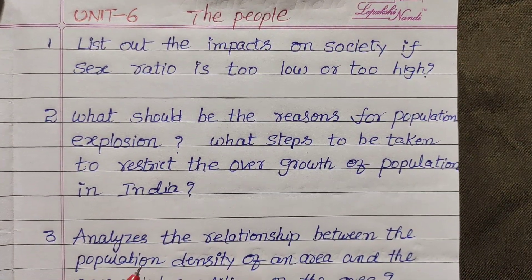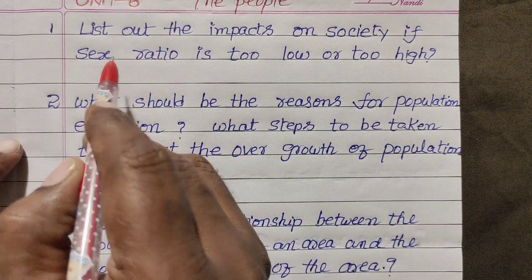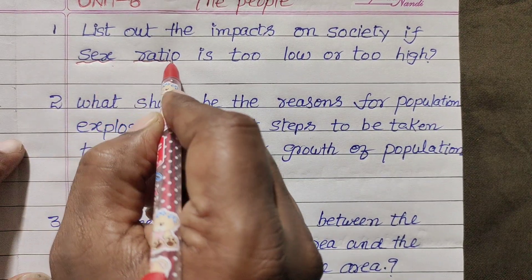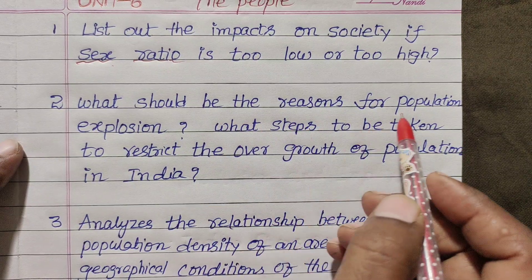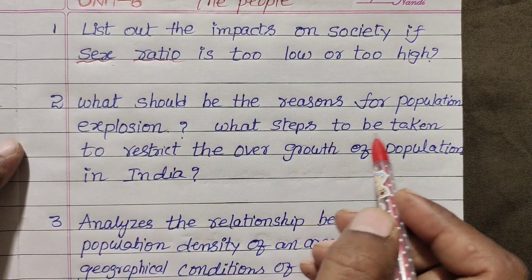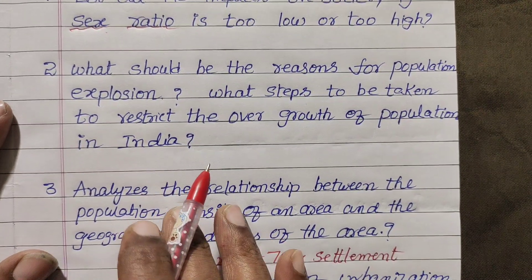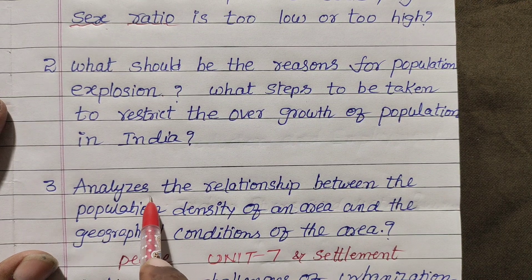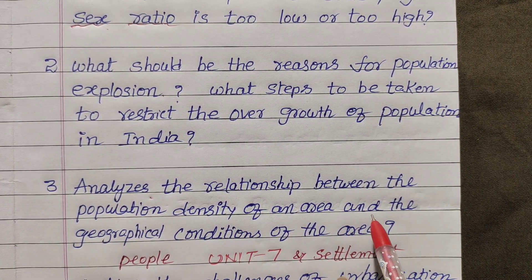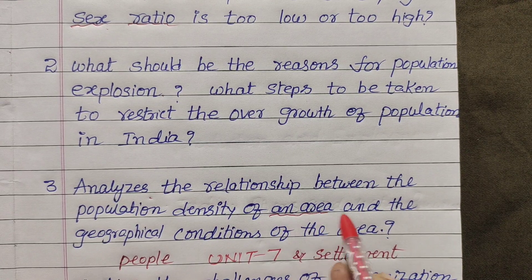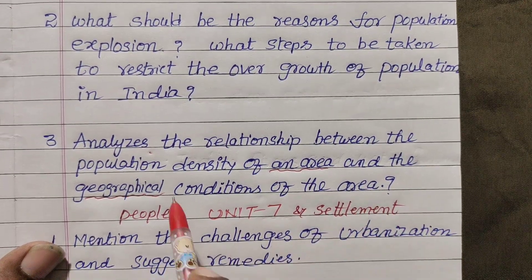Unit on People. First question: list out the impacts on society if the sex ratio is too low or too high. Second: what should be the reasons for population explosion, and what steps should be taken to restrict the overgrowth of population in India? Third question: analyze the relationship between the population density of an area and the geographical conditions of that area.